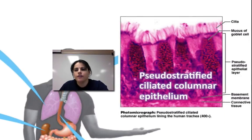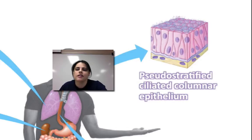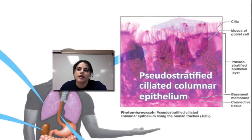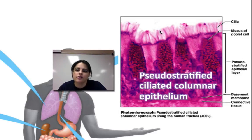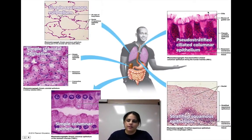And then the most fun one: pseudostratified ciliated columnar epithelial cells. These are found in your lungs and they have little cilia hairs to actually prevent debris from going inside your lungs. You can see them right here. So there are lots of different types of epithelial tissue.